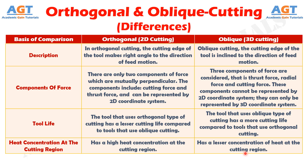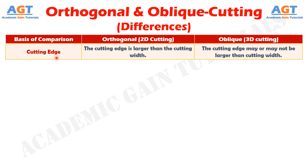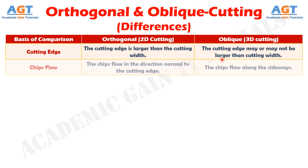If we differentiate them in terms of cutting edge: the cutting edge is larger than the cutting width in orthogonal cutting. Whereas in oblique cutting, the cutting edge may or may not be larger than the cutting width. If we differentiate them in terms of chip flow: in orthogonal cutting, the chips flow in the direction normal to the cutting edge. Whereas in oblique cutting, the chips flow along the sideways.